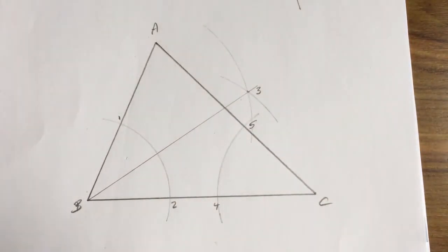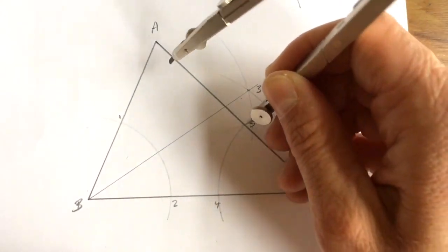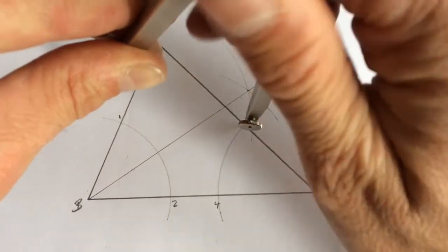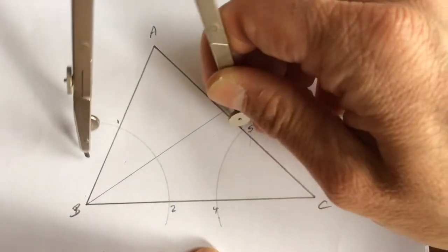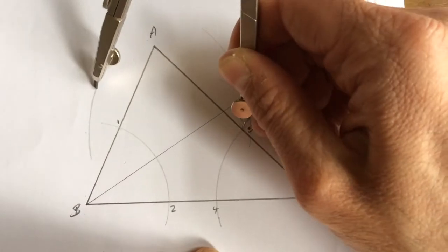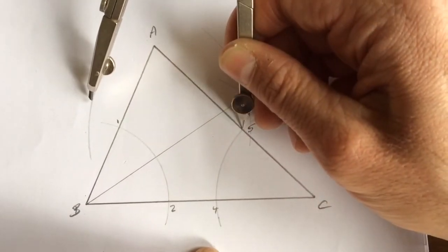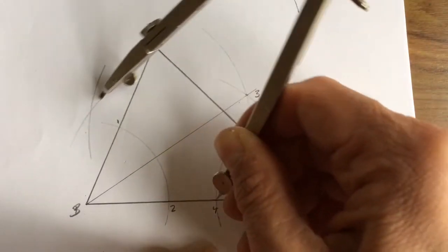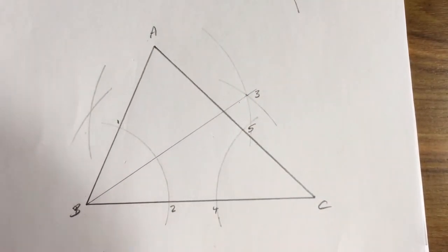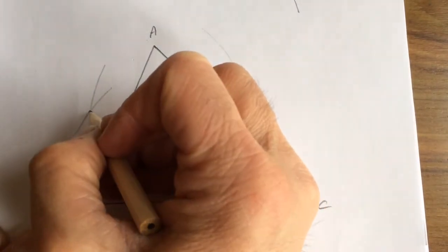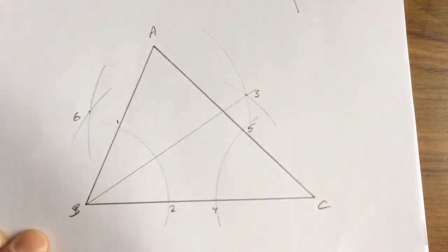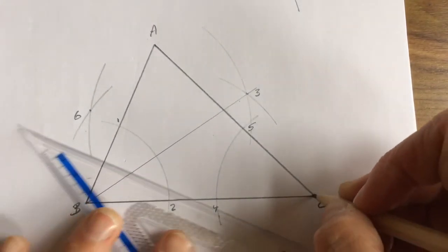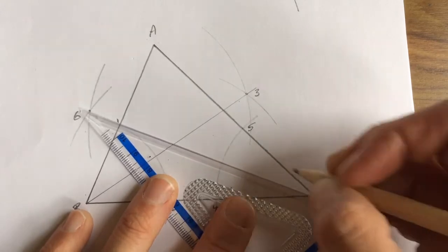I then put my compass point at five, extend it out and swing an arc over here. Keeping the compass at the exact same length, I transfer it down to position four and swing an arc that way. You'll see that these two arcs cross at a new point which I'll call point six. Now to get the bisector of the angle, I join C to point six with a straight line.